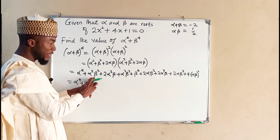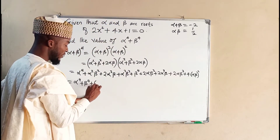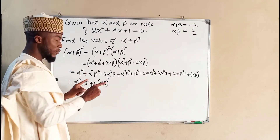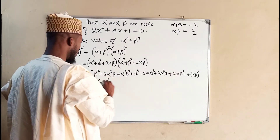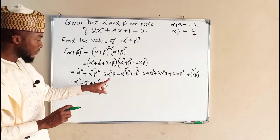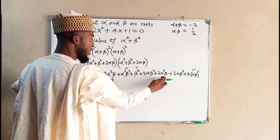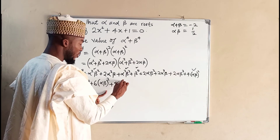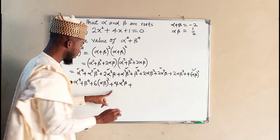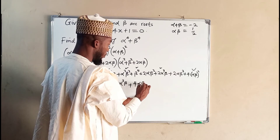Now let us collect the like terms. We can see alpha to the power of 4 here, and beta to the power of 4 here. We join them together: alpha to the power of 4 plus beta to the power of 4. For alpha squared beta squared, we have 1 here, 2 here, and 4 of them here, making 6 of them. So plus 6 alpha squared beta squared, which can be written as 6 times alpha beta squared by laws of indices. Then we group the others together. We have 2 alpha cubed beta and 2 alpha cubed beta, making 4. So we have 4 alpha cubed beta. Then plus, we have 2 alpha beta cubed and 2 alpha beta cubed, making 4 alpha beta cubed.